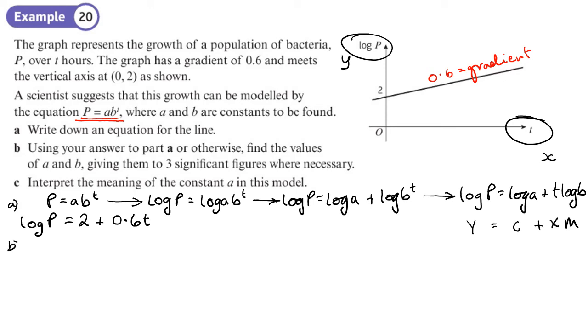Part B, using your equation, find the values of A and B, give them to three significant figures where necessary. So there we go, three significant figures. So log A is equal to 2, isn't it? That's the intercept. Log A, which is the intercept, is 2. So that means that 10 squared is A, which means that A is 100. So it's nice and easy for that bit.